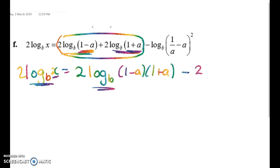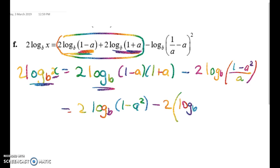And this one, I'm going to write like this. I'm going to use my power rule. 1 over a minus a is equal to 1 minus a squared. So this gives me 2 log to base b of 1 minus a squared minus 2 times log to base b of 1 minus a squared minus the log to base b of a.